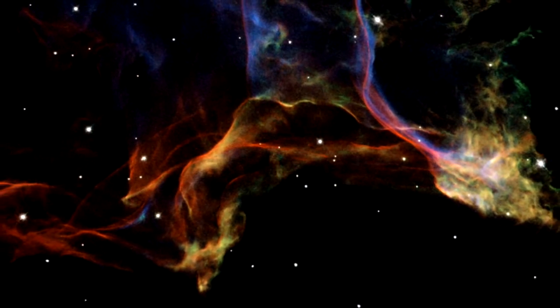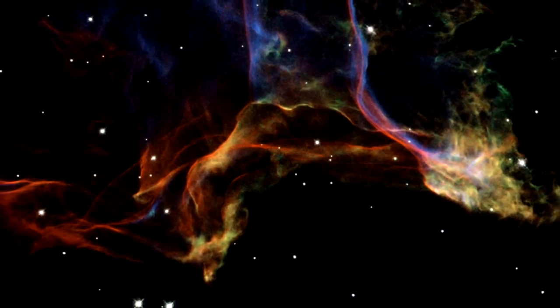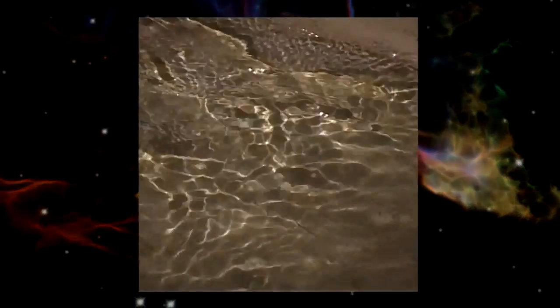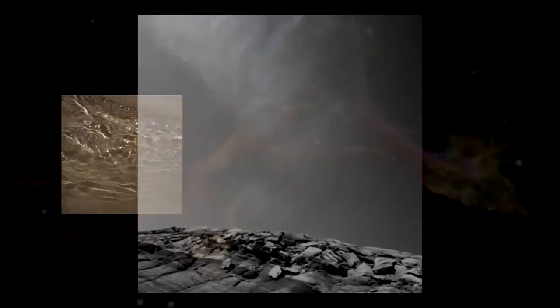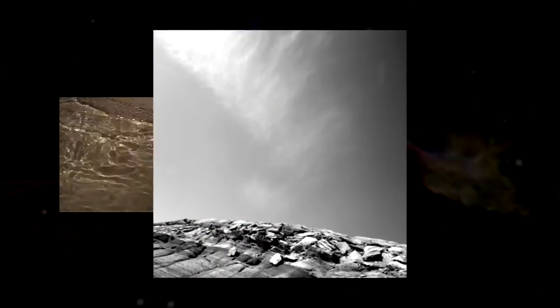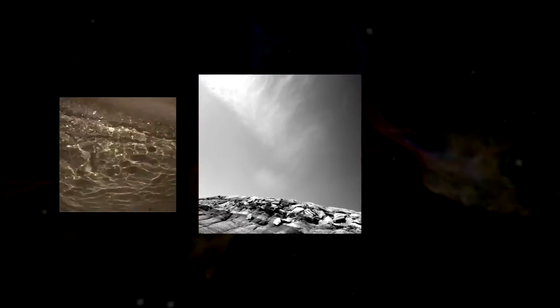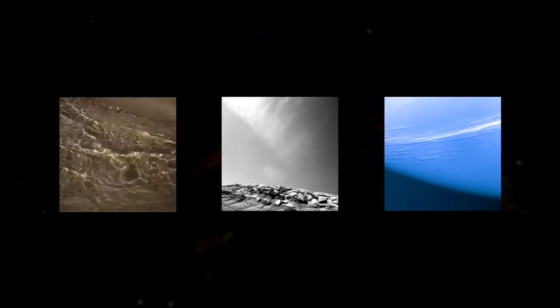The Hubble images of the Veil Nebula are striking examples of how processes that take place hundreds of light years away can sometimes resemble effects we see around us in our daily lives. There are similarities with the patterns formed by the interplay of light and shadow on the bottom of a swimming pool, rising smoke, or wispy cirrus clouds.